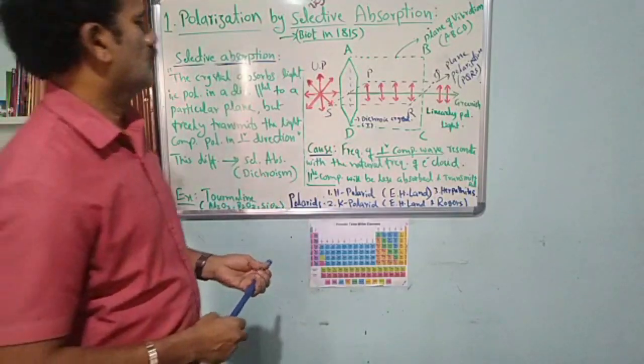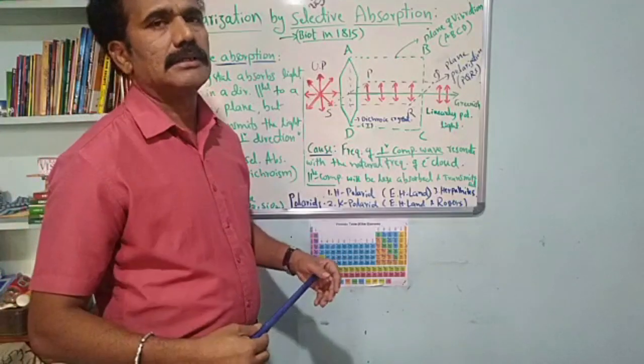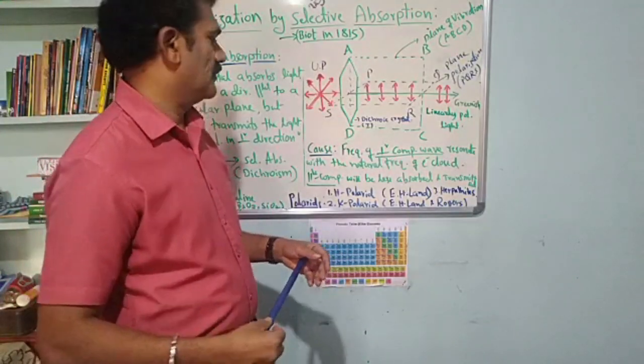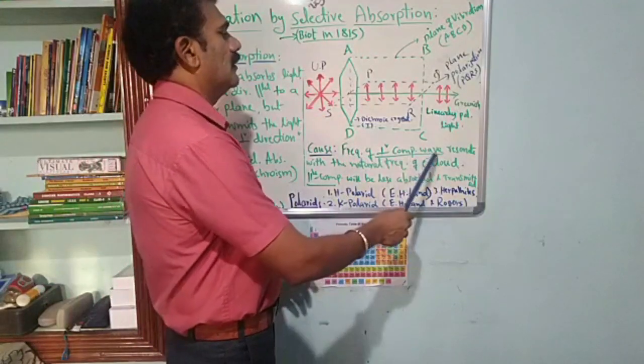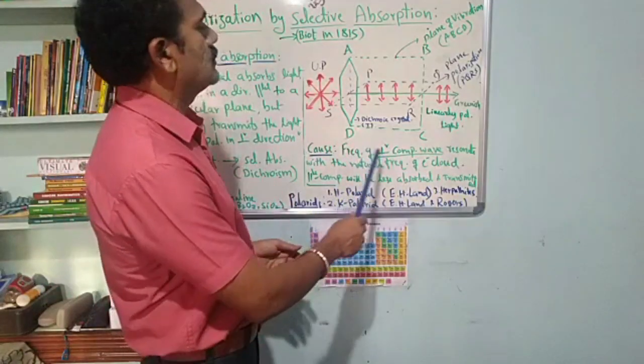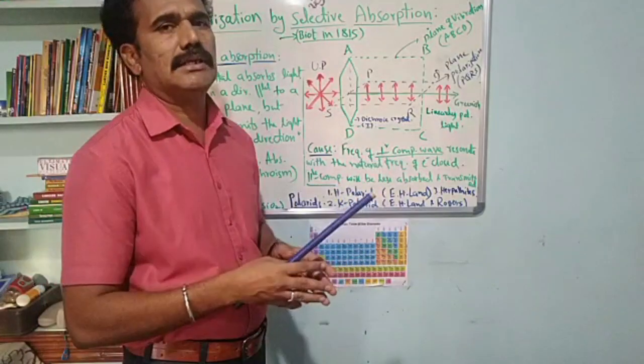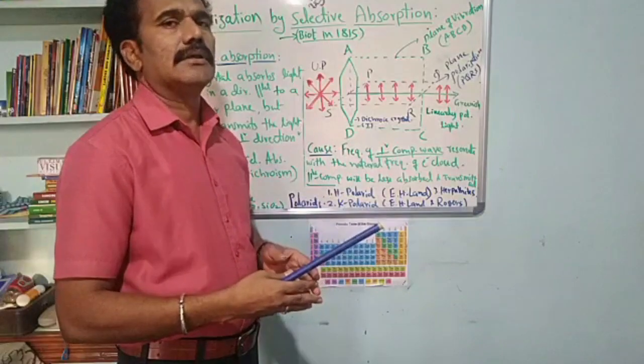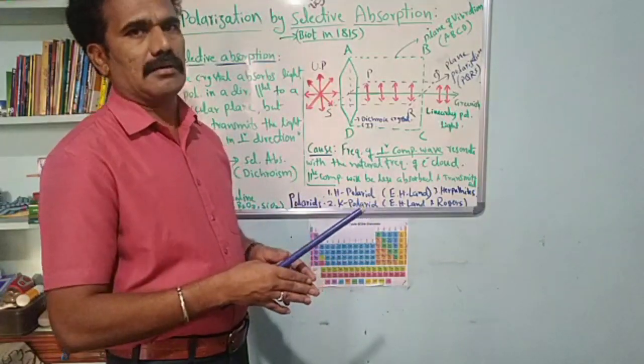What is the cause for this selective absorption in the tourmaline crystal? The main cause is when the frequency of the perpendicular component wave resonates with the natural frequency of the electron cloud. Inside the crystal, if the electrons have a certain vibration frequency that matches the frequency of the perpendicular light components,